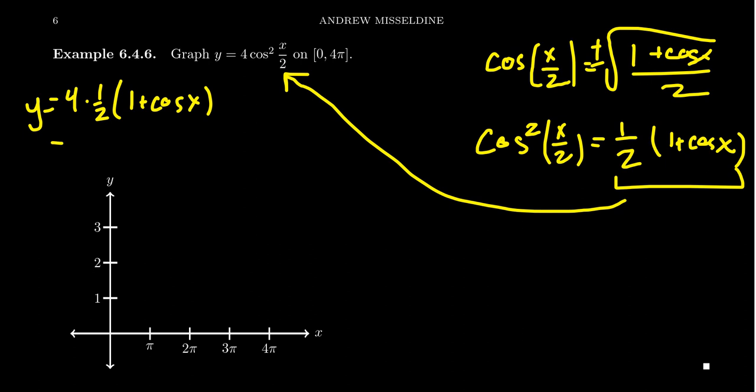One half of 4 is equal to 2, so we get 2 times 1 plus cosine of x. I'm going to distribute that 2 through, and now we just have to graph the function y equals 2 plus 2 cosine of x. How bad is that?